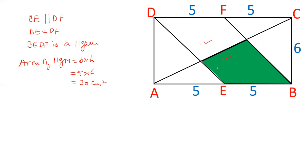And as I told you, these two parts are same. So, just half of that will be the area of green region. So, half of 30, that is 15 centimeter square.